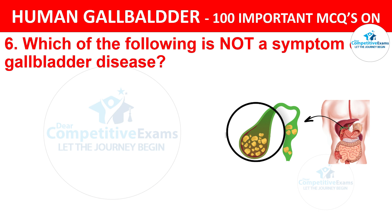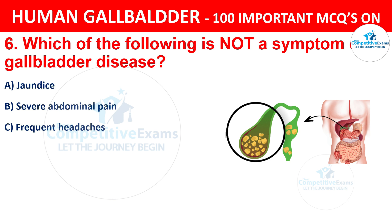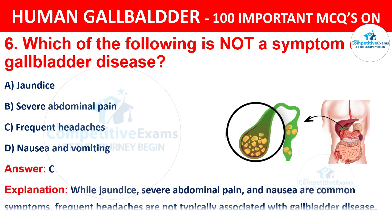Question 6: Which of the following is not a symptom of gallbladder disease? Your options are: A) Jaundice, B) Severe abdominal pain, C) Frequent headaches, D) Nausea and vomiting. The correct answer is C, i.e. Frequent headaches. While jaundice, severe abdominal pain, and nausea are common symptoms, frequent headaches are not typically associated with gallbladder disease.